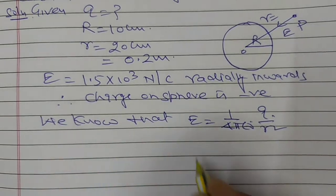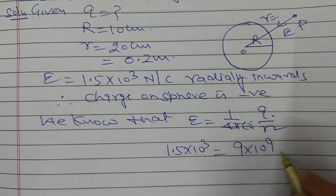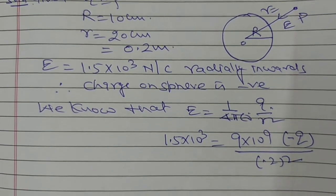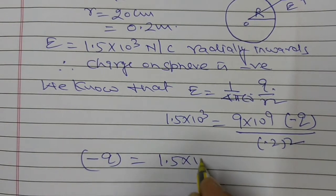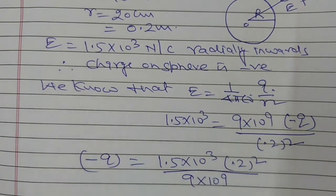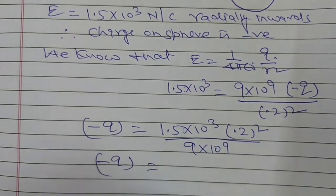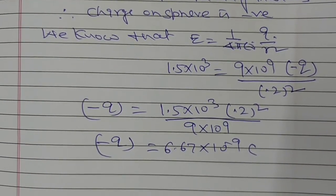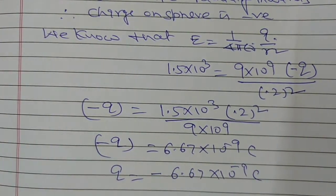On putting the values, E is equal to 1.5 into 10 to the power 3 N per Coulomb, and this is 9 into 10 to the power 9, with charge minus Q upon distance square of 0.2 m. On solving, minus Q is equal to 6.67 into 10 to the power minus 9 Coulomb, or Q is equal to minus 6.67 into 10 to the power minus 9 Coulomb.